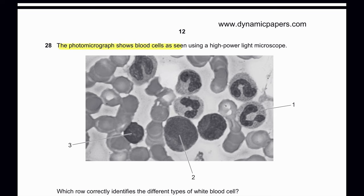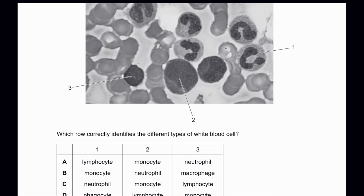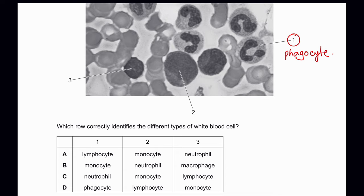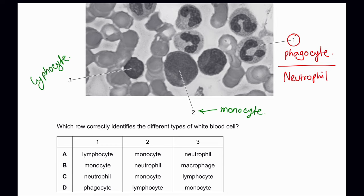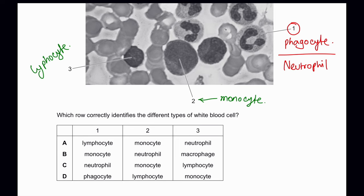Question 28: The photomicrograph shows blood cells. Cell 1 identifies a white blood cell — specifically a phagocyte or neutrophil, because it has a lobed nucleus. Cell 2 identifies a monocyte because of the large nucleus. Cell 3 shows a lymphocyte — smaller than a monocyte but with the nucleus covering the whole cell. The question asks which row correctly identifies the cells. For cell 1, neutrophil and phagocyte were both correct; for cell 2, only monocyte is correct; for cell 3, only lymphocyte is correct. So C is the correct answer.